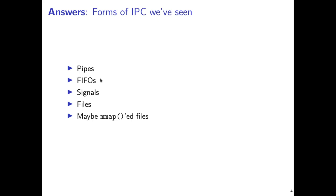FIFOs were like pipes except they had a named position on the file system — they're being studied in the homework right now. You don't need such a close relationship between processes; they can be quite distant, even in different terminals. On the other hand, they do have to know the names of the FIFOs. Any communicating processes must be given names for where the file is on the file system — either by using a well-known name, as in a server with a well-known FIFO that clients write into, or by including a response FIFO name in the client's request.